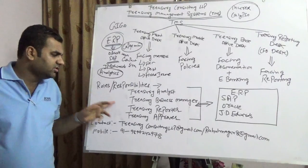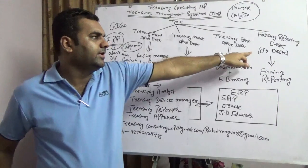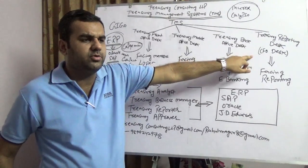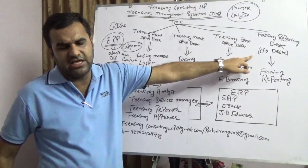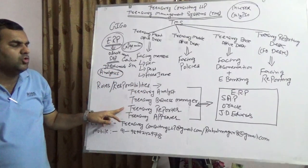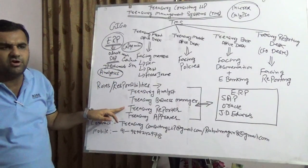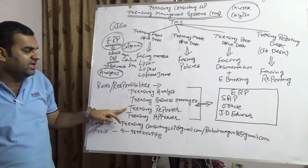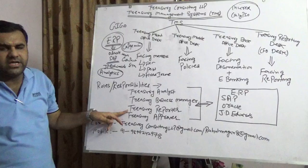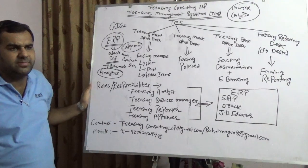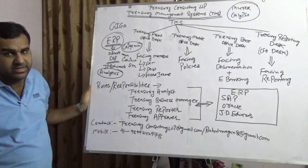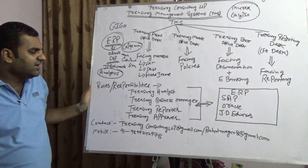Then you have the treasury reporter. This person is taking care of the CFO desk. Their job is to ensure that all the reporting formats made in the treasury management system are accessible for reporting. Please note that this is a very sensitive and confidential job. If this person were to share numbers with people outside the company, it would be a big mess for the company.